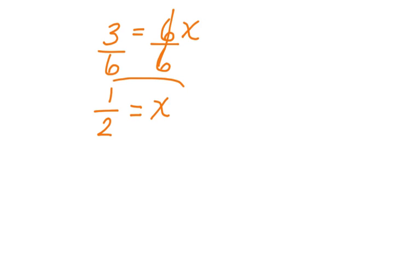Now if I have 3 is equal to 6x, I want x alone, I'm going to divide both sides by 6. Now if I have 3 sixths on this side, I cancel on this side. 3 sixths can be simplified to 1 half. 1 half is equal to x. My work is now complete.